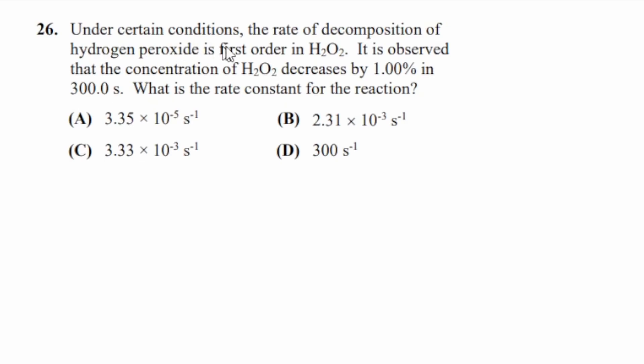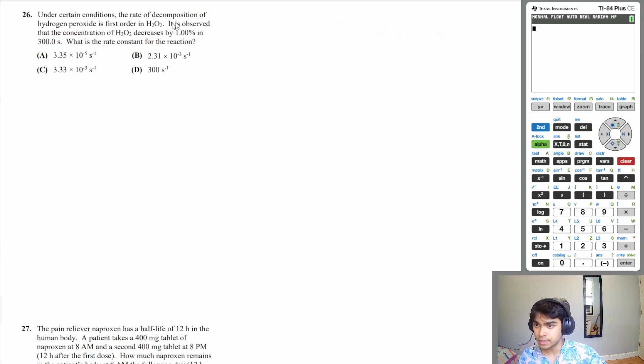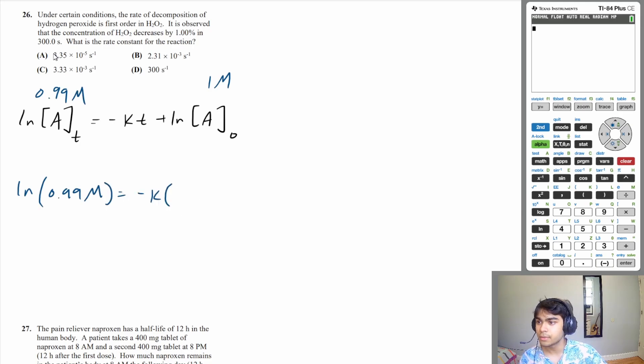Let's move on to question 26. Under certain conditions, the rate of decomposition of hydrogen peroxide is first order in hydrogen peroxide. It is observed that the concentration of hydrogen peroxide decreases by 1% in 300 seconds. What is the rate constant for the reaction? Well, we're told that the decomposition is a first order reaction. So let's use our first order kinetics formula, which tells you that the natural log of the concentration at some time T is negative KT plus the natural log of the initial concentration. Okay, so we know that the concentration of hydrogen peroxide decreases by 1%. So it doesn't really matter what your initial concentration was. Let's just say it was 1 molar. Well, then your concentration at some time T, or at 300 seconds, is going to be 0.99 molar. So let's plug that in. So natural log of 0.99 molar is equal to minus K times T. We know our T is 300 seconds.